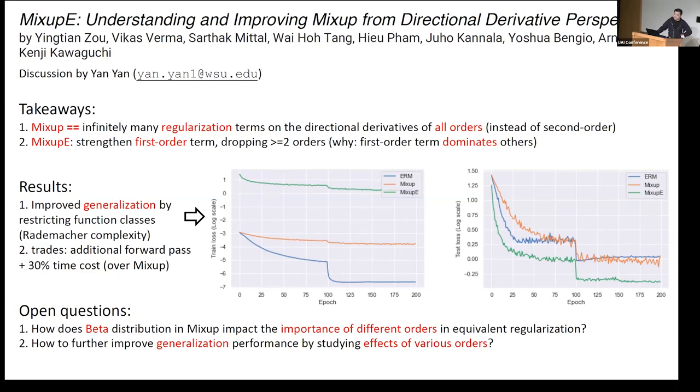So the result is obviously the generalization performance can be improved by using the enhanced version of the mixup, and also supported by some empirical result on the right side on this page. And also, there are some notable stuff to highlight. It's the trade for this improved generalization performance is the additional computational cost, which means that we may have one actual forward pass and plus a 30 percentage of the time cost over compared to the standard mixup method. So I have two questions I think is open or unclear in this paper or this area. The first one is that how does the beta distribution in mixup impact the importance of the different orders in equivalent regularization? As we mentioned, the first-order term will be the dominant term in the other multiple-order equivalent regularization. So is there any principle inside the beta distribution function, how this can be influenced to the final form of the importance in the summation of the regularization? And the second question is how to further improve the generalization performance by studying the effect of the various orders, which means that how we can identify which one may be better and how we can make use of the importance of the multiple-order term in the regularization to improve further the generalization performance. Actually, the second question also identified in the paper in the end of the conclusion. So yeah, that's all my consideration for what I learned and what I seen from this paper. Yeah, thank you.